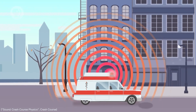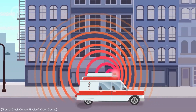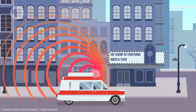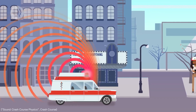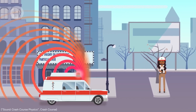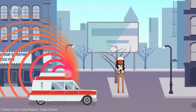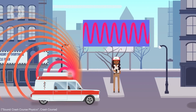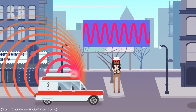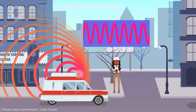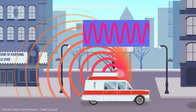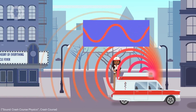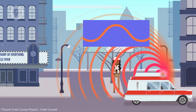To understand this effect, consider an example of a moving ambulance with its siren on. As the ambulance approaches an observer, the sound waves it emits are compressed, resulting in a higher frequency and a higher perceived pitch. Once the ambulance passes the observer and moves away, the sound waves become stretched, causing a lower frequency and a lower perceived pitch.